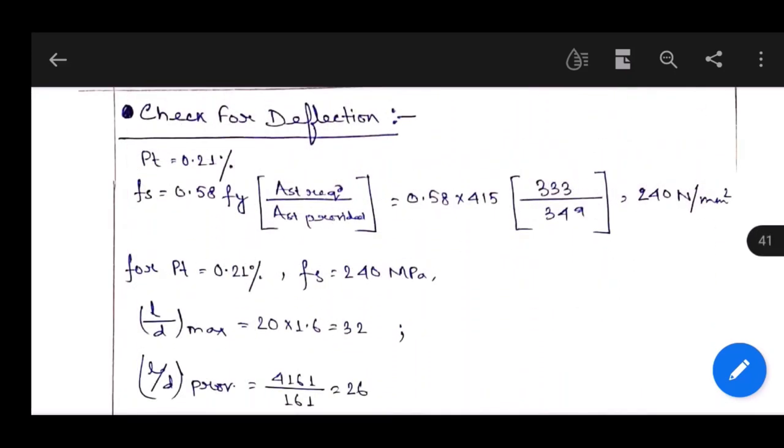Next step is check for deflection. We have to find the modification factor from IS 456:2000 figure 4. That modification factor will be multiplied with length-to-depth ratio. Percentage of steel is 0.21. FS, from the formula given below figure 4, equals 0.58 times FY times AST required by AST provided, equals 240 N/mm².